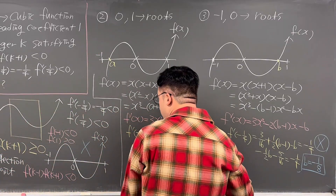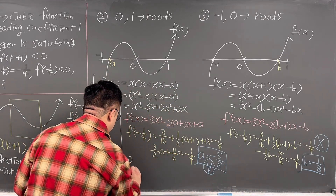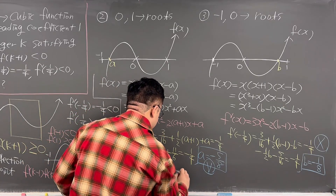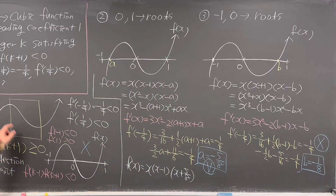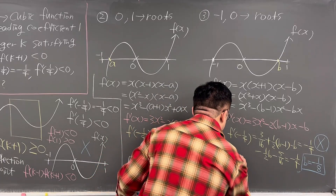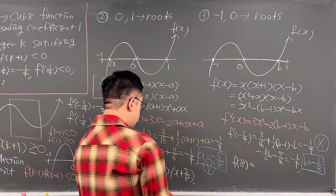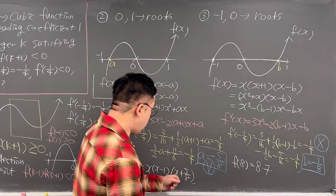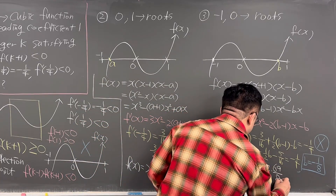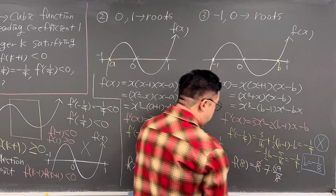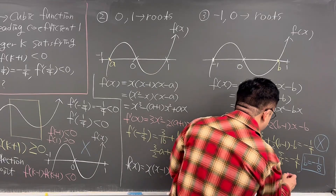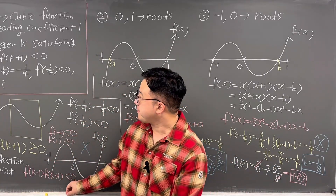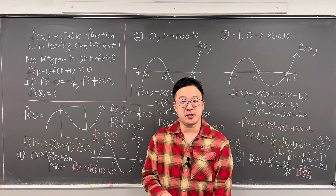So f(x) = x(x-1)(x + 5/8). The question asks for f(8): that is 8 × 7 × (8 + 5/8) = 8 × 7 × (69/8). The 8 cancels, giving 7 × 69 = 483. So the answer is 483. Pretty interesting killer calculus question from Korean SAT Math — how amazing!